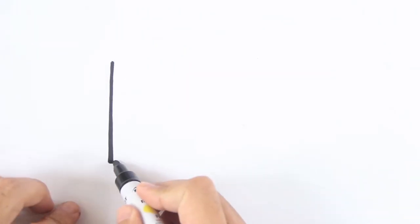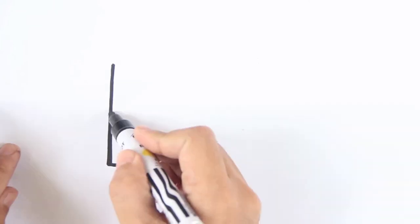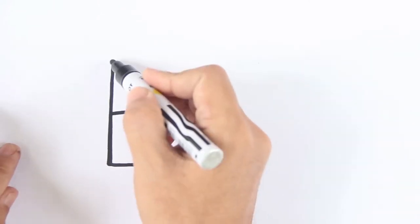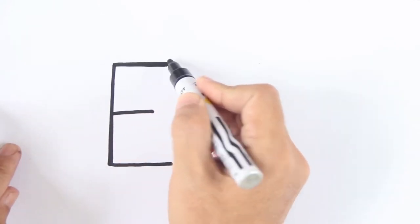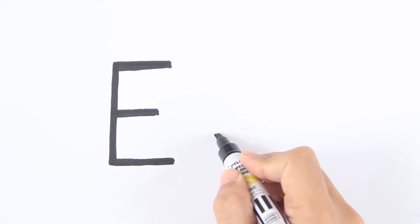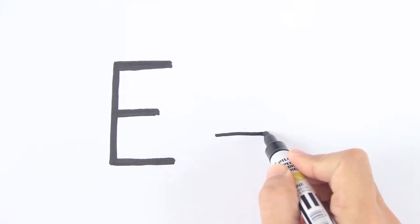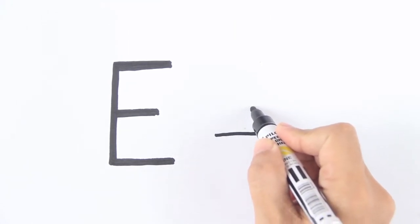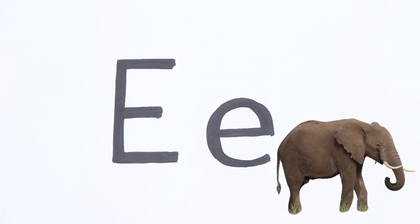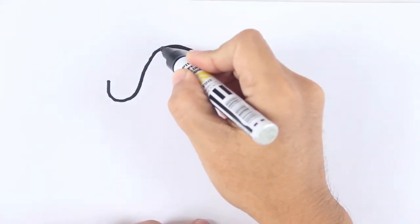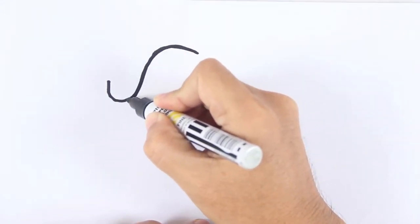This is capital letter E. And this is small letter E. E is for elephant. Let's draw an elephant.